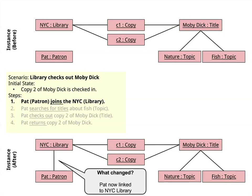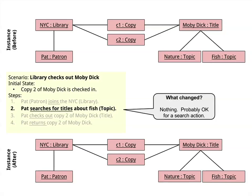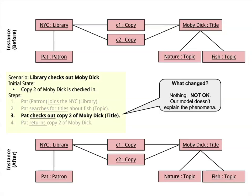So in order to reinforce that, let's see what the world looks like before this step and after this step. You can see up here that Pat is not a patron of the library before, but afterwards we've added a line in our diagram to link those two — and that's a result of this action occurring, Pat joining the New York City Library. In the second step, you see that Pat searches for titles about fish. In this case, there's no change in the before state and the after state. Now, if you're a company really involved with logging, that would be a problem because you don't see any change in the model. But for searches in general, that's fine — my model didn't change.